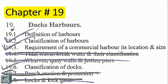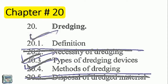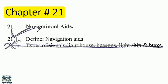Topics also include beach erosion and protection, locks. Chapter 20: Dredging — necessity of dredging and disposal of dredging material. Chapter 21 (last chapter): Navigational aids — signals, lighthouses, light shapes, and buoys, including definitions of navigation aids.